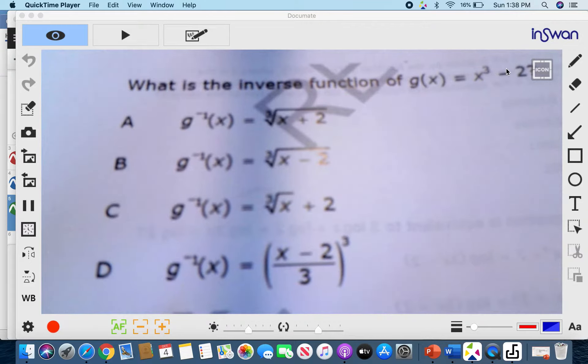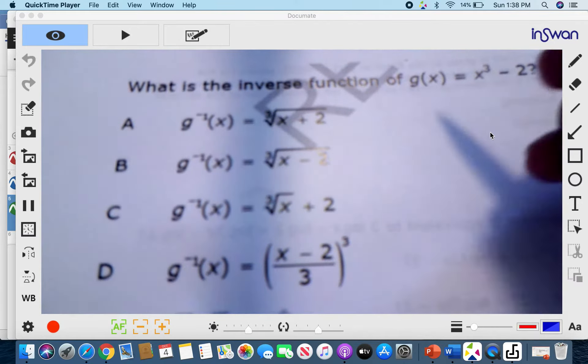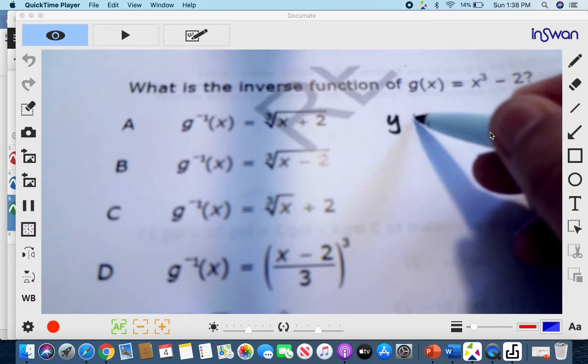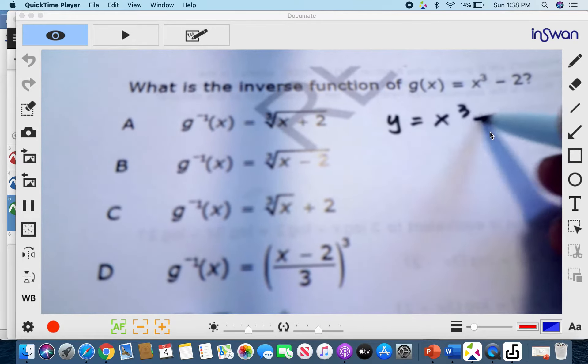So how do we find the inverse of g(x) equals x cubed minus 2? We will follow the basic steps to find the inverse of a function. The first thing is to take this g(x) and make it as y. So y equals x cubed minus 2.